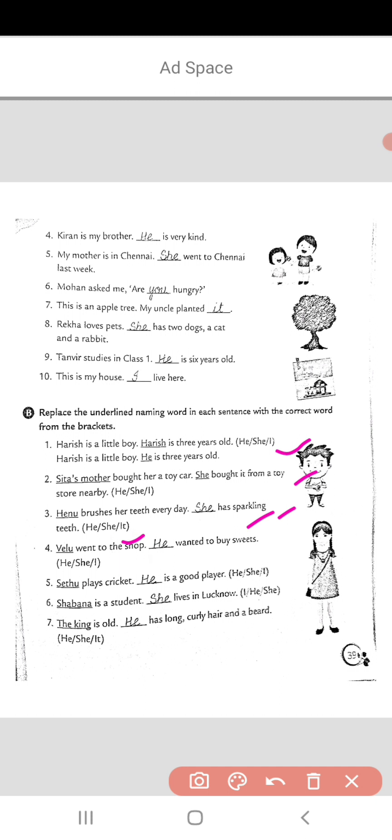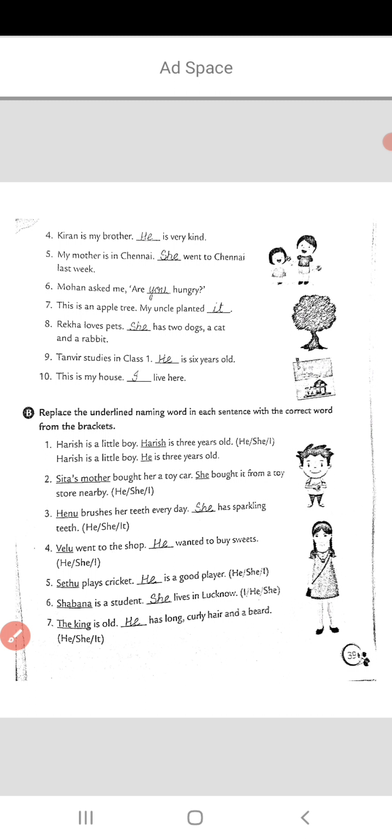'Velu went to the shop. Dash wanted to buy sweets.' As Velu is the name of a boy, the pronoun 'he' will be used: 'He wanted to buy sweets.' So children, you have to complete this part in the same way. That's all for today. Thank you so much.